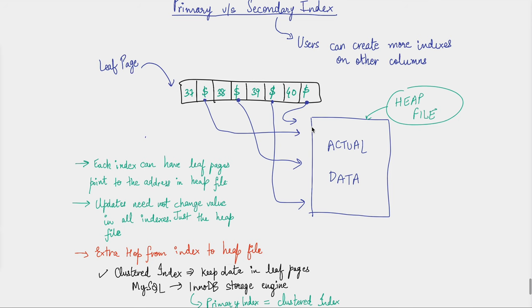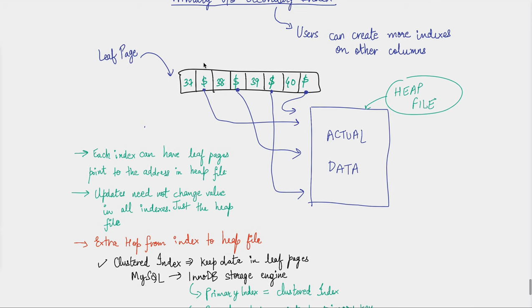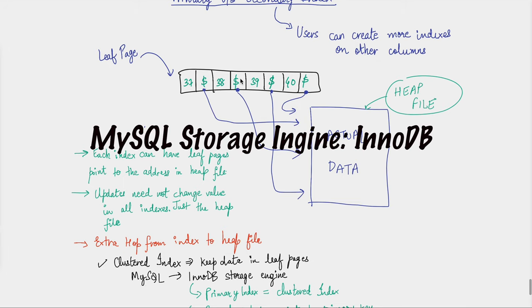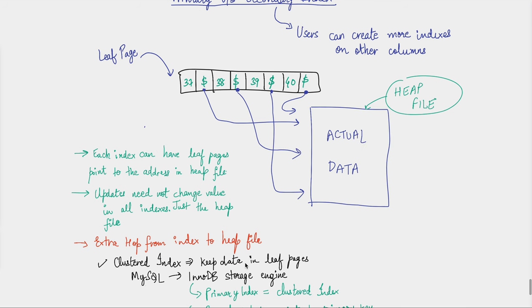Another approach for primary indexes is to store the value directly in the leaf page rather than a pointer to actual data. The reason is that pointing to actual data is another disk I/O operation — the data resides at some other physical address, requiring the disk to spin and seek to the correct position, which takes time. Sometimes you can't afford that additional hop. For example, MySQL's InnoDB keeps the data in the leaf pages itself — this is called a clustered index.